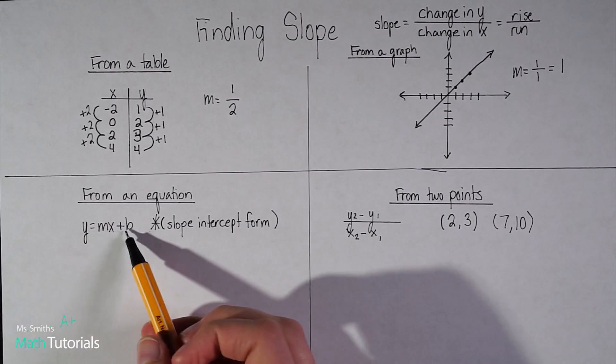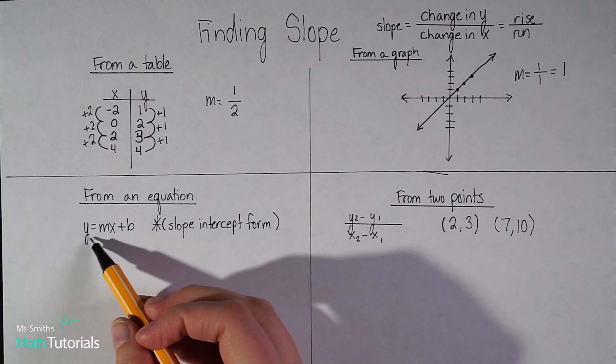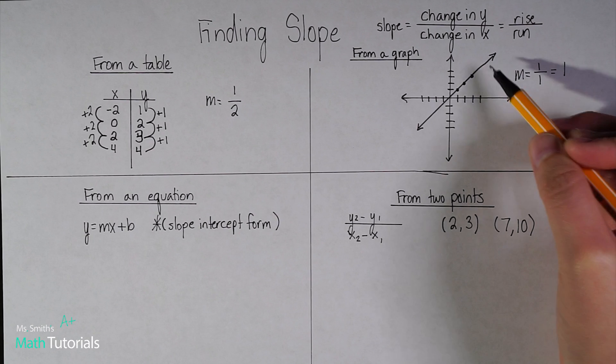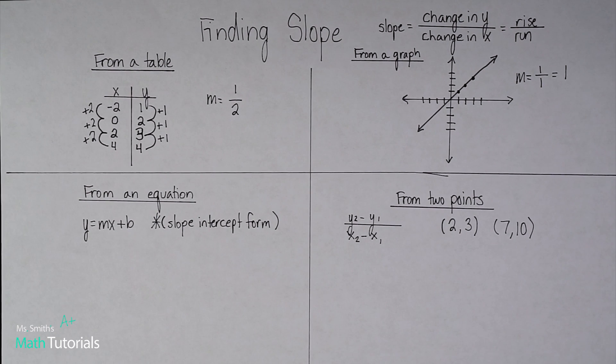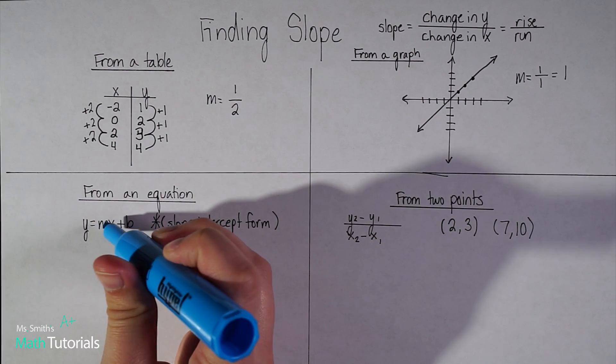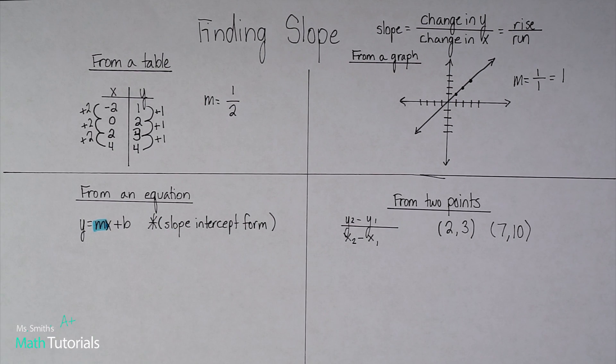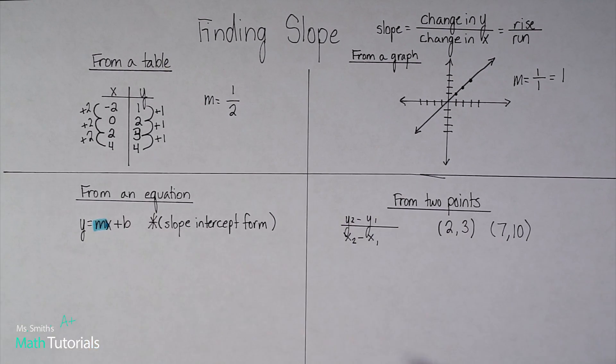You need to think y equals mx plus b. So this is a linear equation. Anytime you see a y equals mx plus b, you know that you could graph that into a straight line. And we'll look at the different types of lines you could have. But within this equation, slope is going to be your m value. So notice I'm just highlighting the m. I'm not highlighting the x.